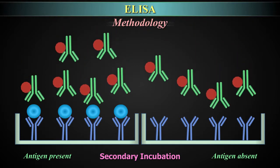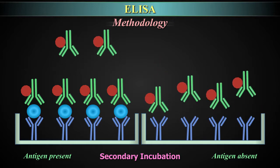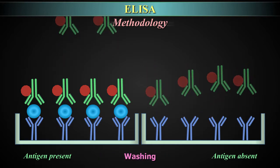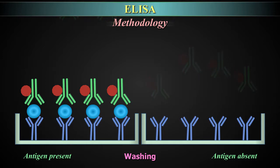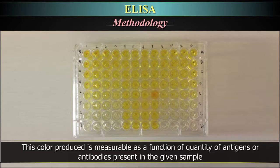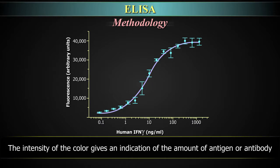After some time, the plate is washed to remove serum and unbound antibodies or antigens using wash buffer. To detect the bound antigens, a secondary antibody attached to an enzyme such as peroxidase or alkaline phosphatase is added to each well. After an incubation period, the unbound secondary antibodies are washed off. When a suitable substrate is added, the enzyme reacts with it to produce a colour, which is measurable as a function of quantity of antigens or antibodies present in the sample.